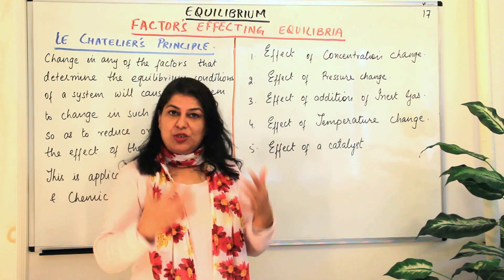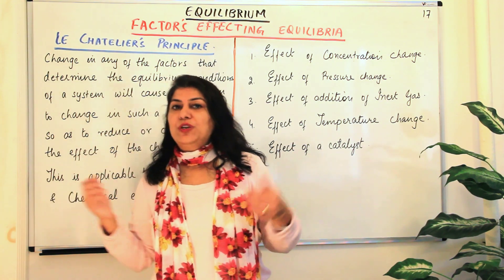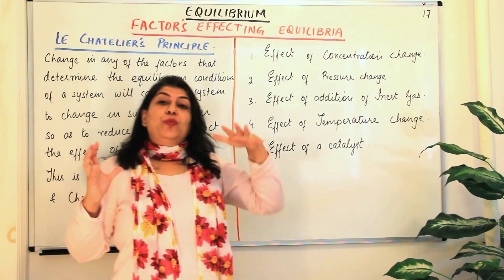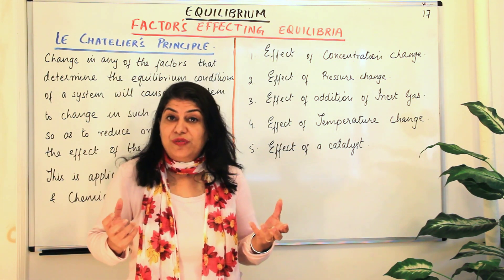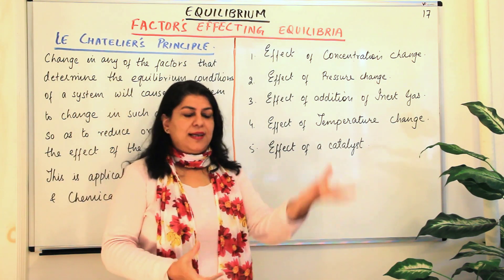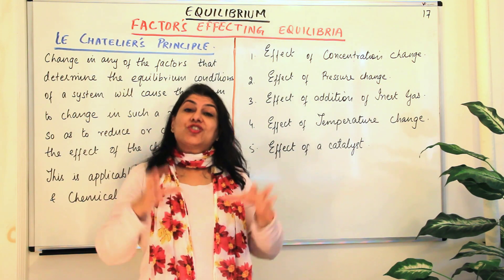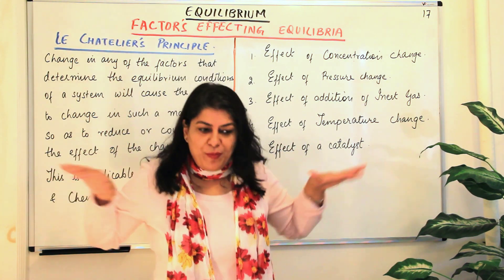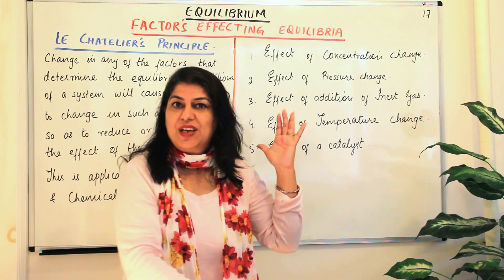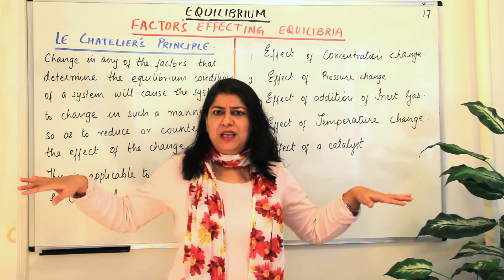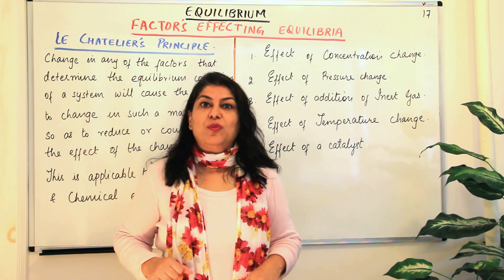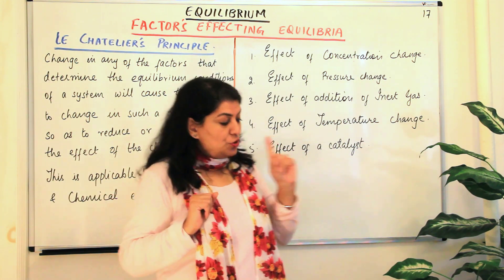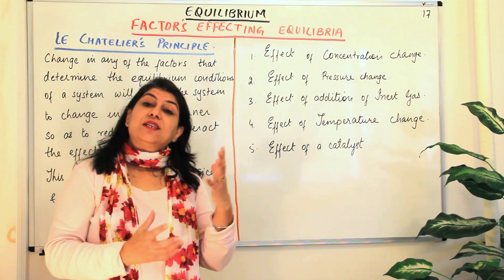I would encourage you, if you do not understand what I'm saying, to go back and view one or two earlier videos where I explained the relationship between QC and KC — that is, the reaction quotient and KC. So if you increase or decrease the concentration of a reactant or product — for example, by removing a gas that has been produced — you change the concentrations. The moment you do that, it causes stress to the equilibrium, and the equilibrium tries to counteract the effect of that stress and establish equilibrium again.